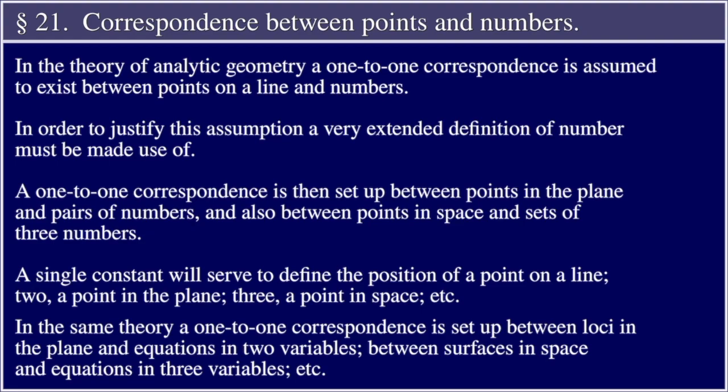A one-to-one correspondence is then set up between points in the plane and pairs of numbers, and also between points in space and sets of three numbers. A single constant will serve to define the position of a point on a line, two, a point in the plane, three, a point in space, etc.